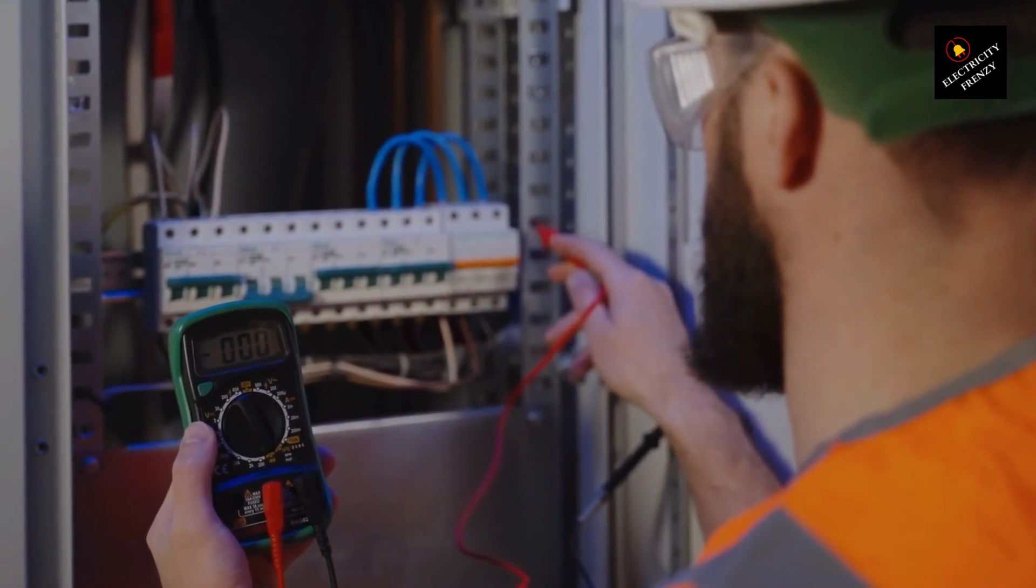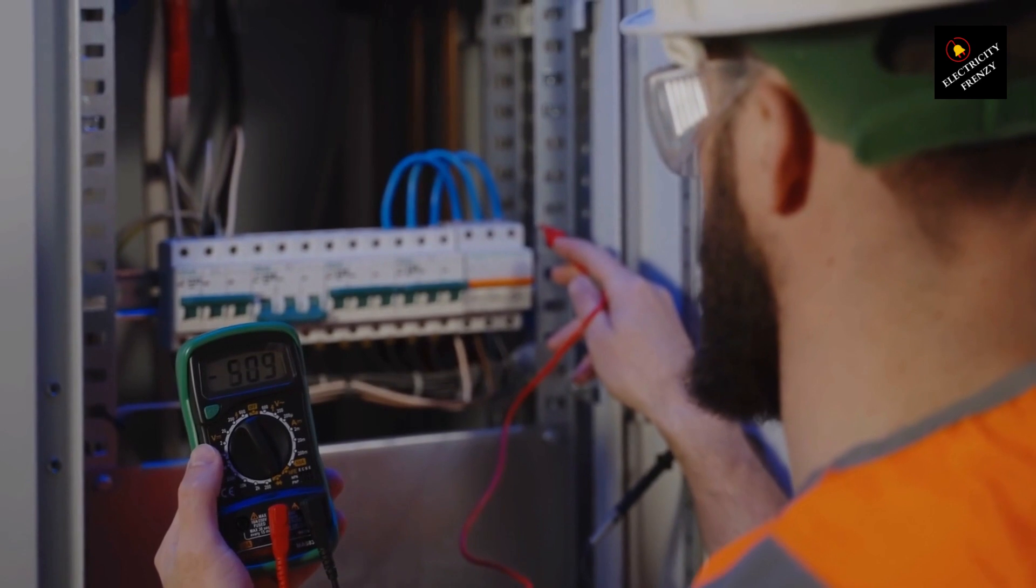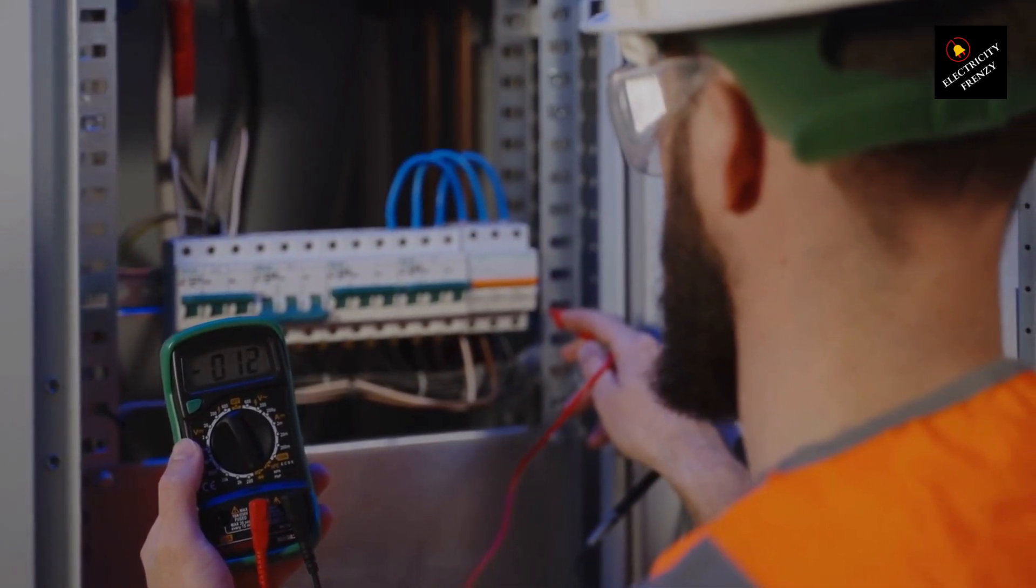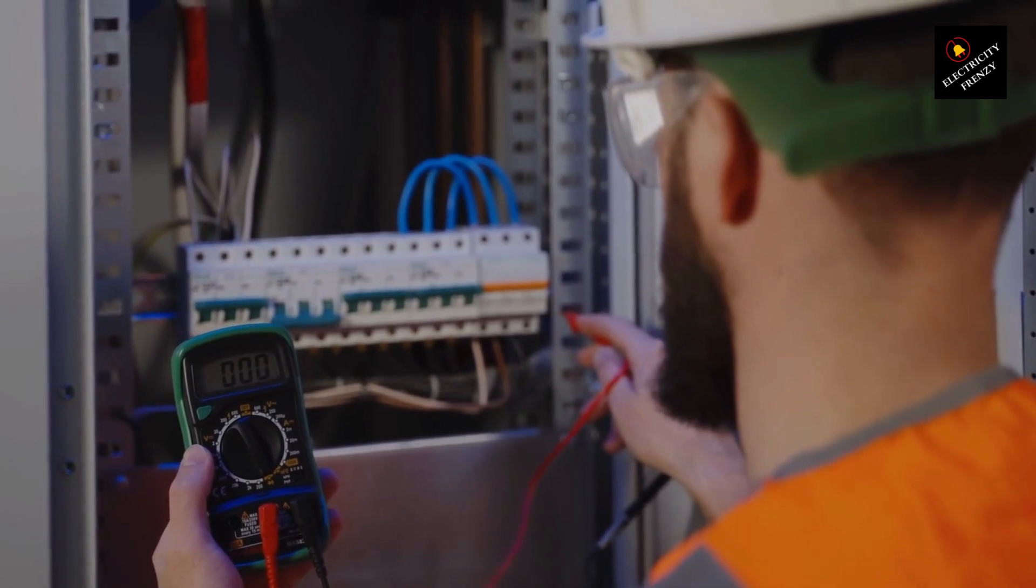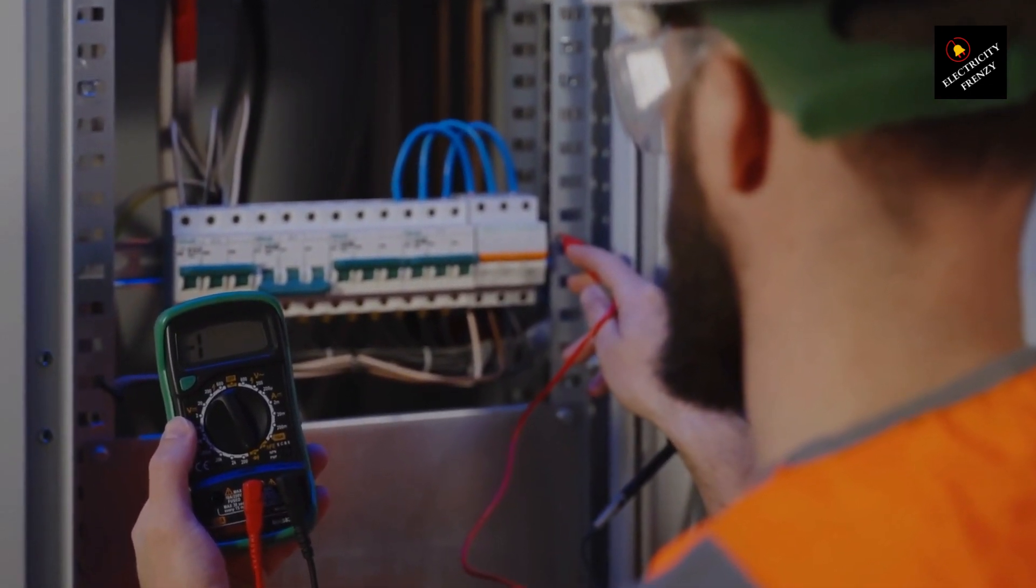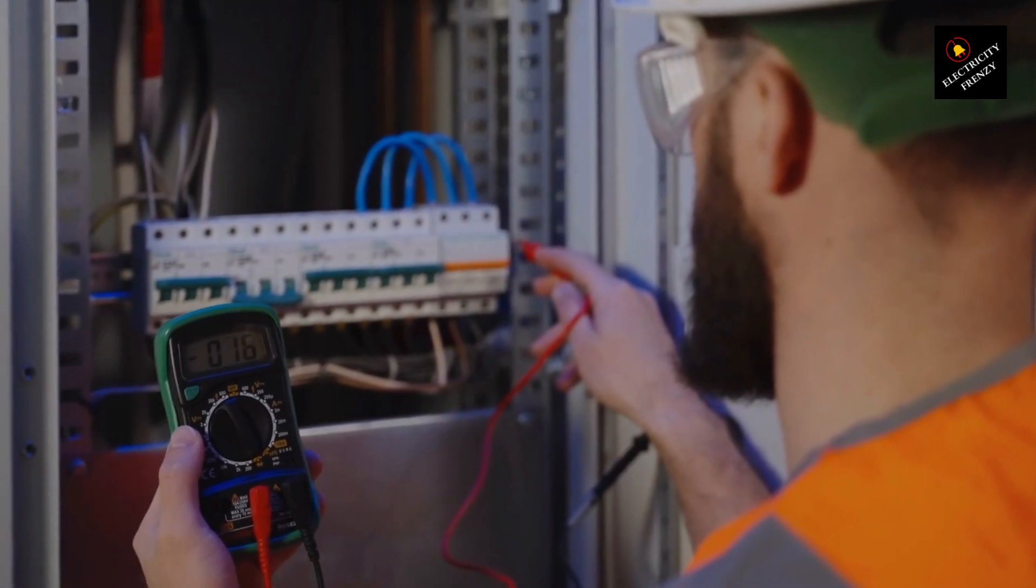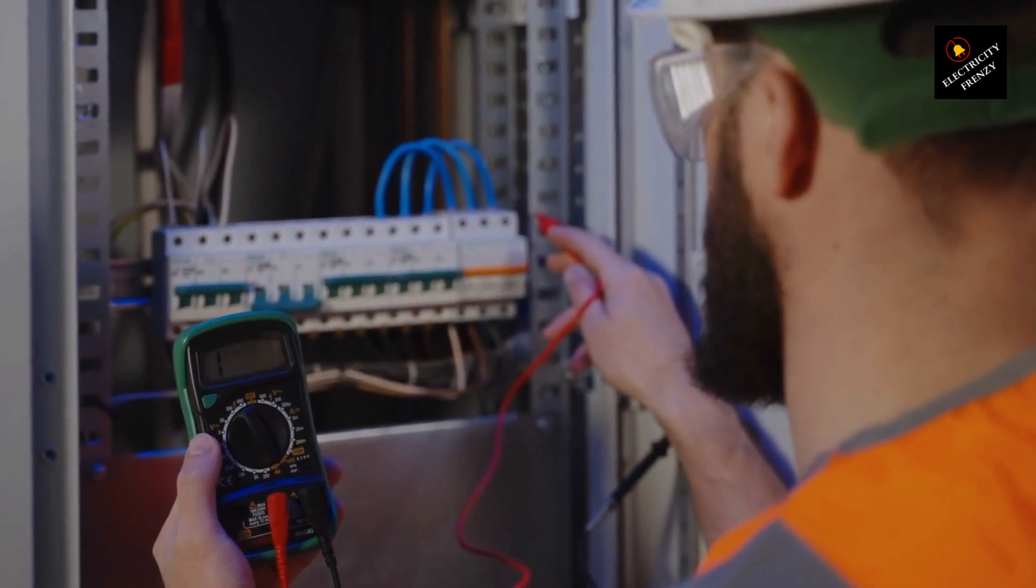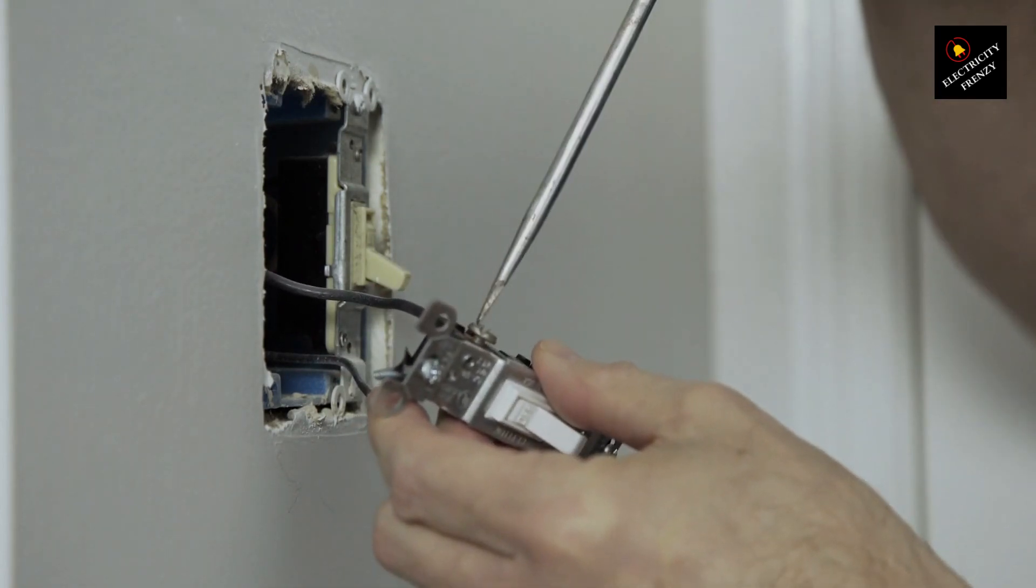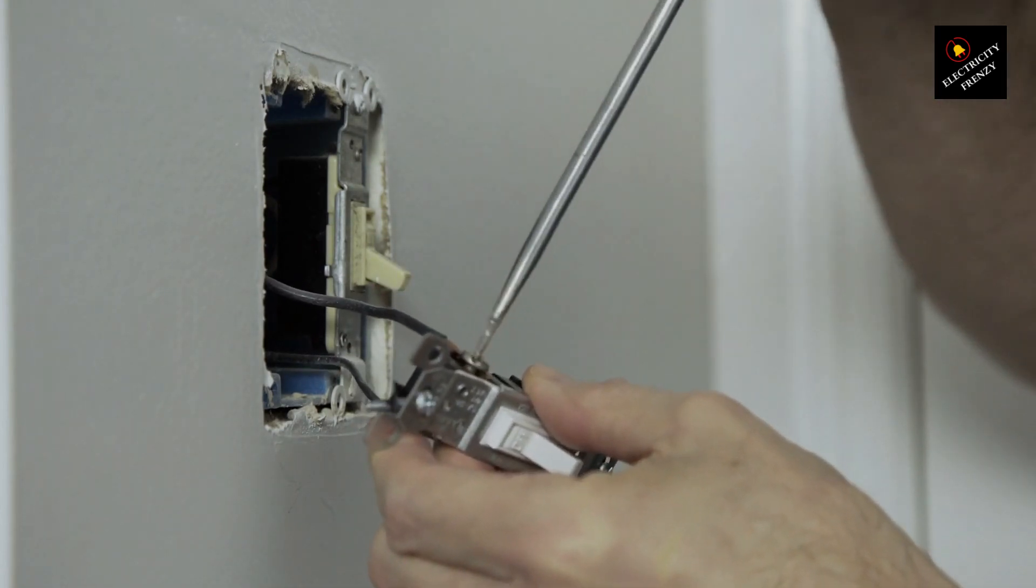IP Rating: The IP (Ingress Protection) rating is a standardized system that indicates the degree of protection provided by enclosures against solid particles and water. The IP rating consists of two digits. The first digit represents protection against solid objects, while the second digit represents protection against water. For outdoor use, look for motors with IP ratings suitable for the specific environmental conditions.